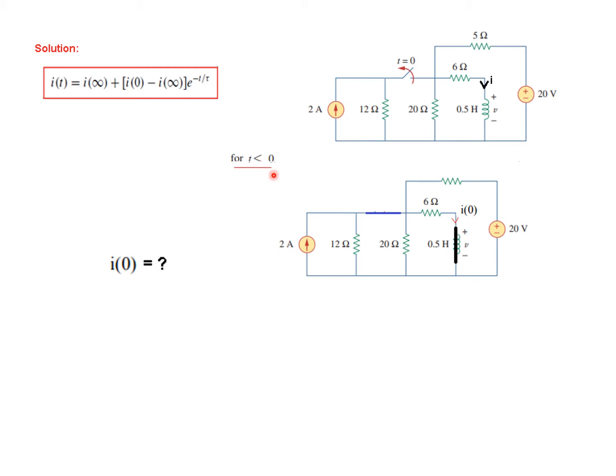For t less than 0, the circuit is in a steady state condition and this switch is closed. It will open at t equals 0, so it is closed. Because the circuit is in steady state, the inductor will be considered to be a short circuit.